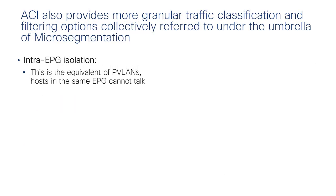As part of the micro-segmentation feature set, we consider primarily three features. The first is intra-EPG isolation, which addresses the requirement for isolating hosts within the same EPG. This is very similar to using private VLANs in a classic network — the requirement is that hosts in the same EPG cannot talk to each other, but they can communicate with hosts in other EPGs or the internet.